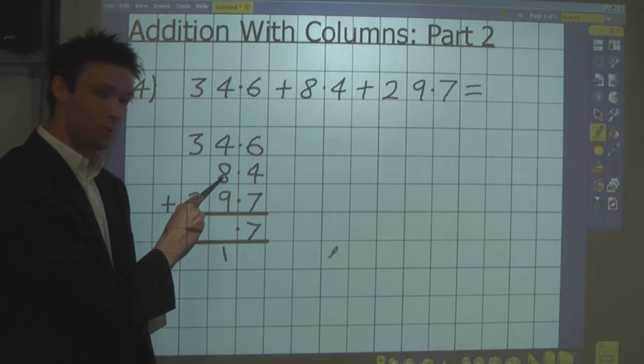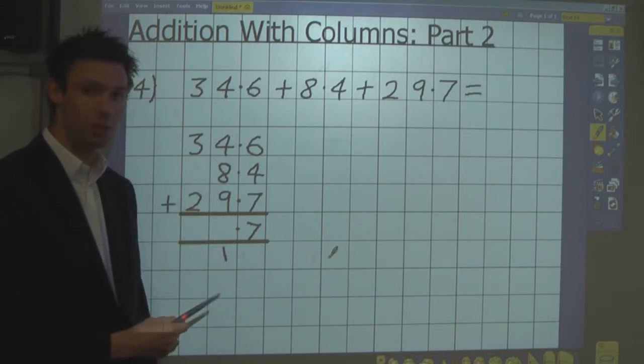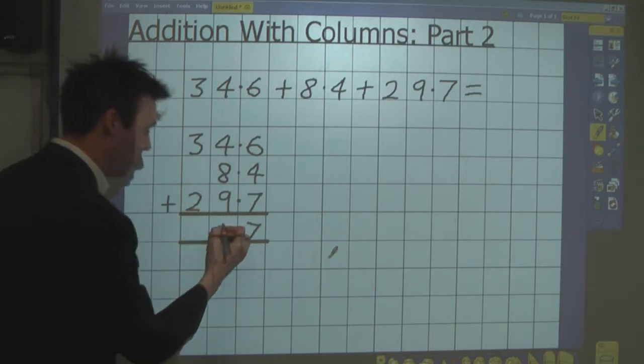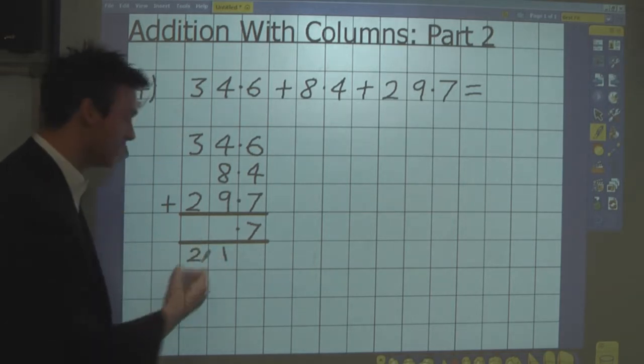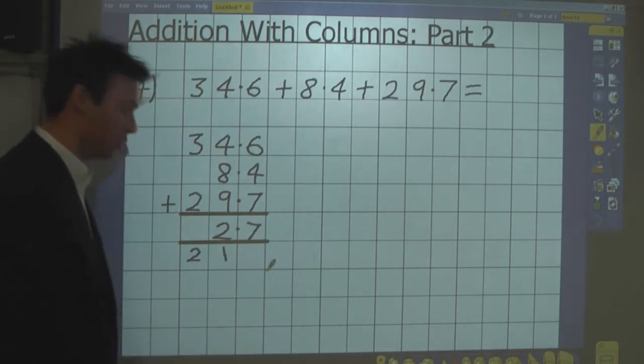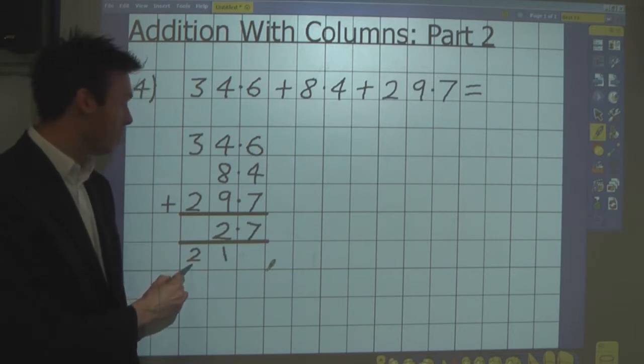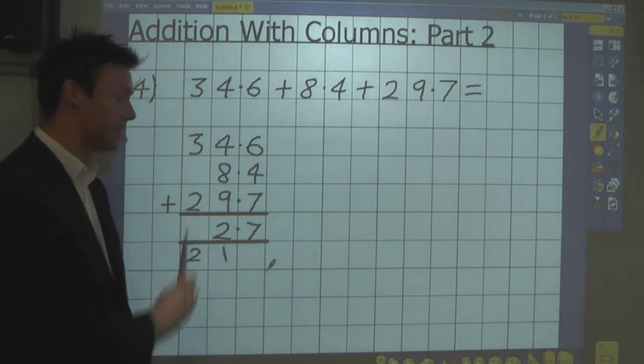And then I can add the 8, which gives me 18. And then I add the 4, which gives me 22. Which is written as two tens and two units, 22. And notice the digit 2 is written here. But it represents two tens because it's in the tens column.